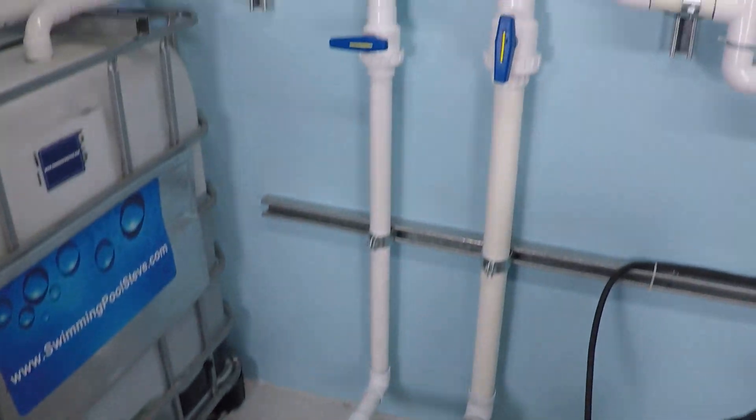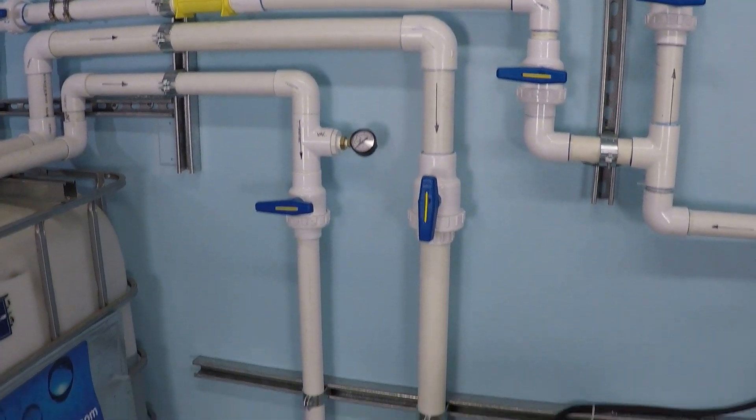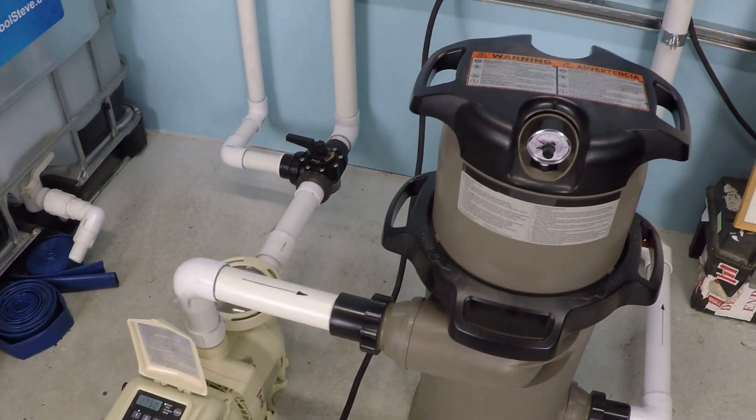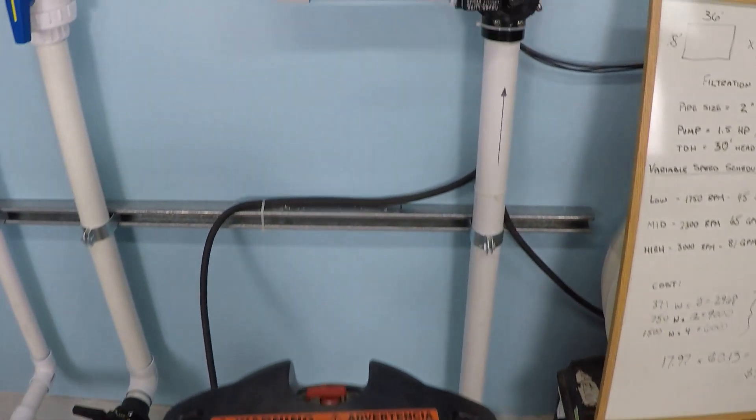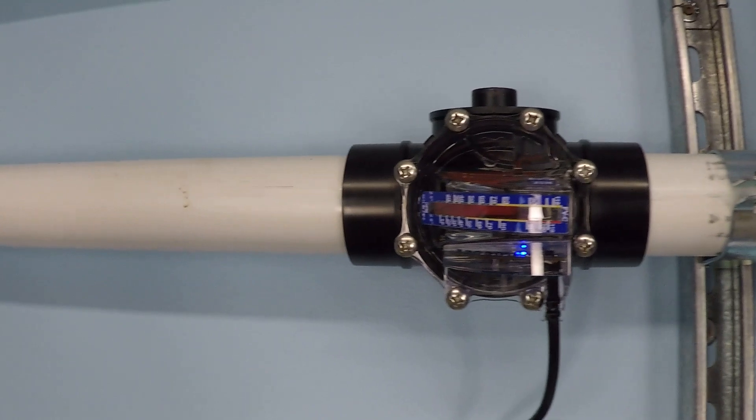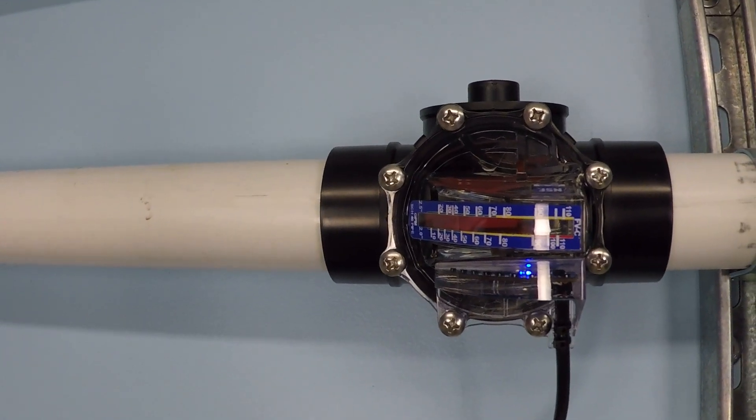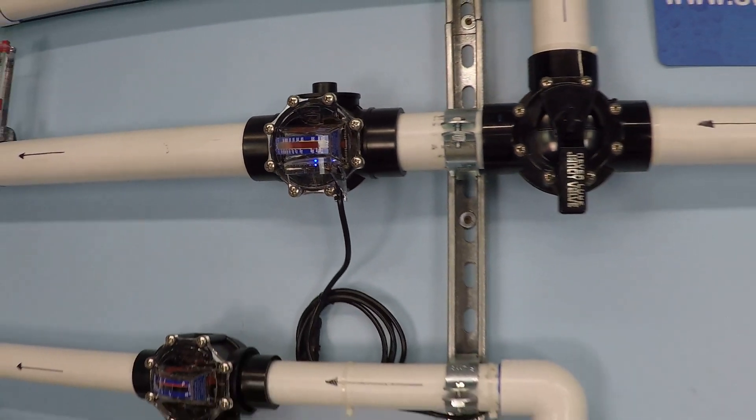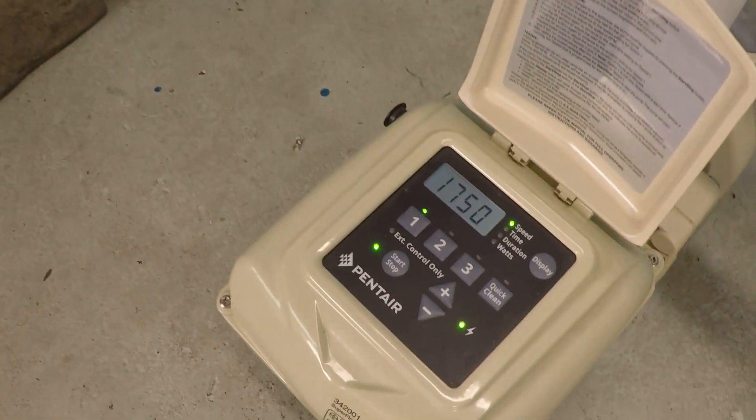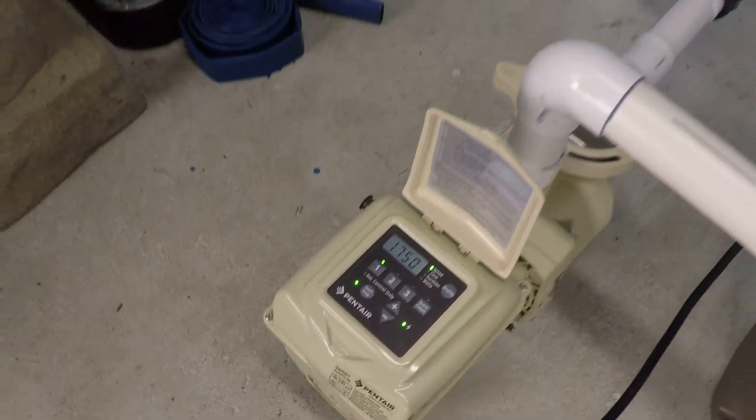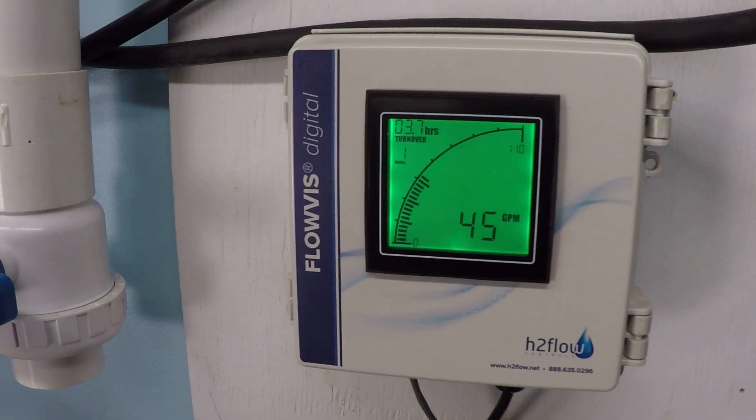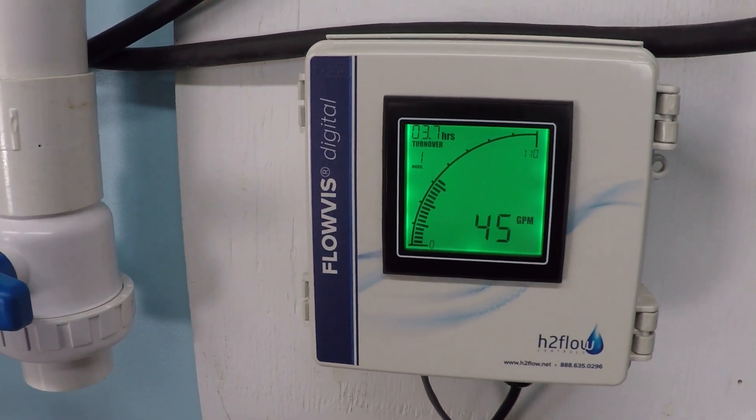The system is currently running with a single 2-inch suction line, 1.5 horsepower variable speed pump, 150 square foot cartridge filter. We're measuring through this 2-inch line to this flow meter that has been adapted with the digital readout that we're reading from. As you can see here, we're up to 1,750 RPM and we're getting 45 gallons per minute.